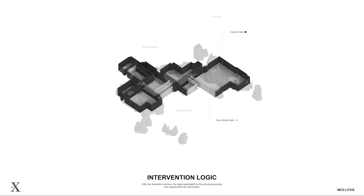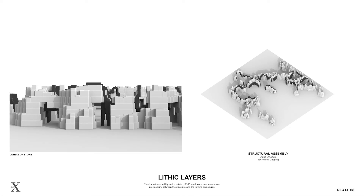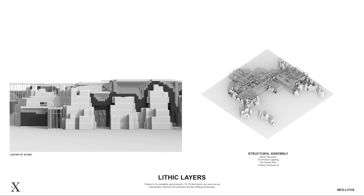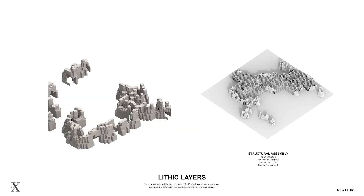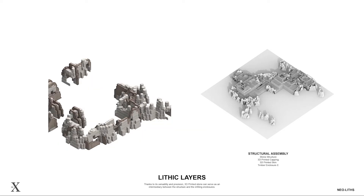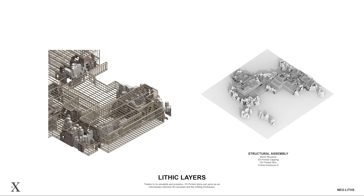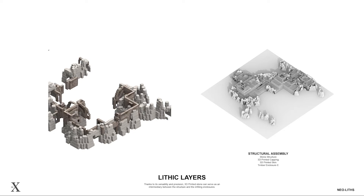We divided the walls into two categories: infected walls, for those in direct contact with the stone, and non-infected ones, for those detached from it. Non-infected walls are constructed out of timber to span across the structure and become the skin of the building. Infected walls are subdivided and evaluated based on their proximity to the structure to create layers of 3D printed stone that serve as intermediaries between the lithic assemblies and the timber enclosures.